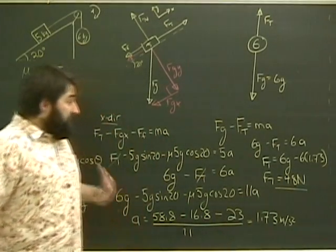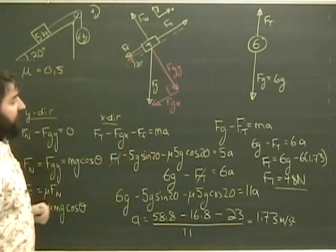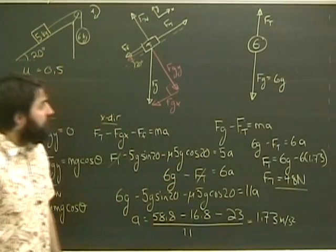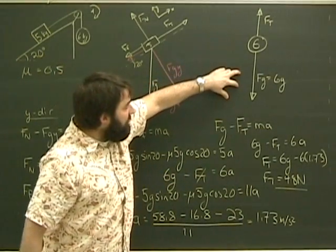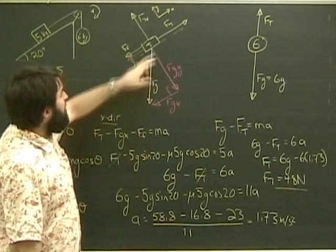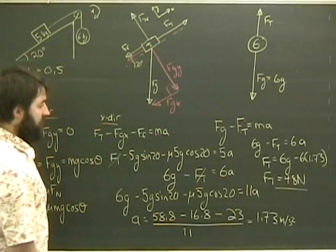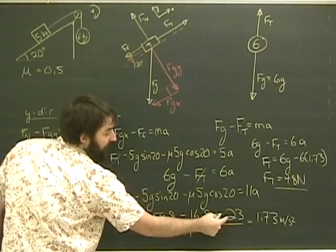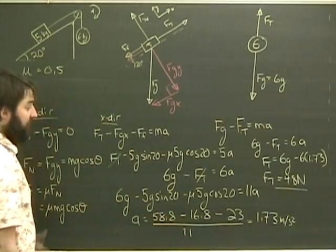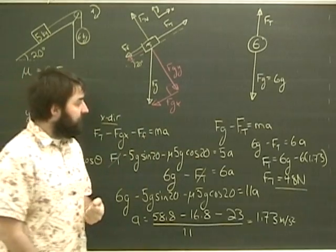So now I stop, does this make sense? Acceleration is 1.7 in this direction. The tension is 48. Well, the tension is less than gravity over here, which is why this guy accelerates down. Okay, that makes sense. The tension going up here is more than my friction and my gravity put together. 48 is bigger than these two added together, so it will accelerate up. So everything sort of makes sense.